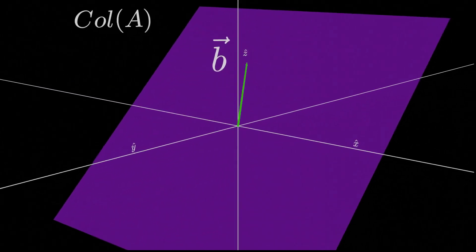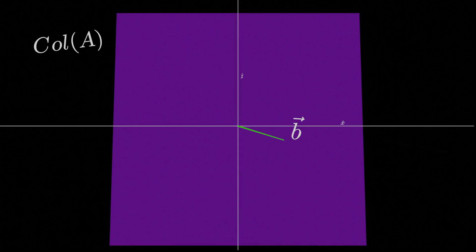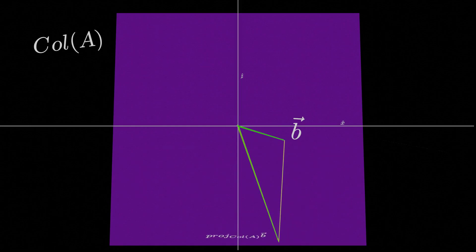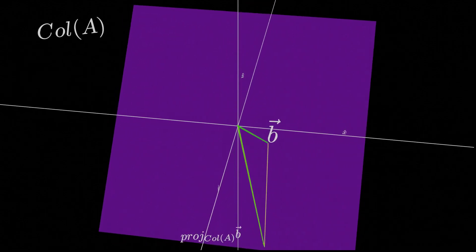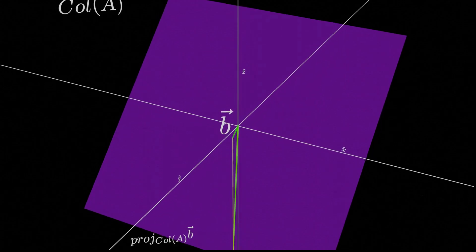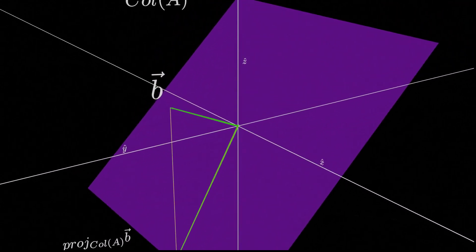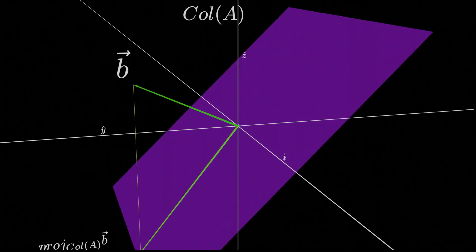Now why might you want to do this? Well when using the method of least squares, remember we are not finding an x vector in our linear system that is perfectly reproducing our B vector. Instead we're projecting our B vector onto the column space of our A matrix and then finding an x vector that reproduces that projection.